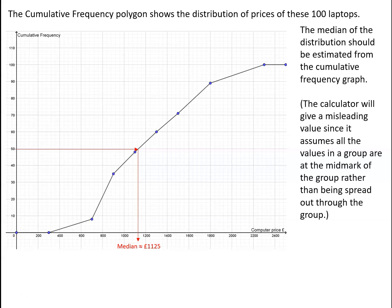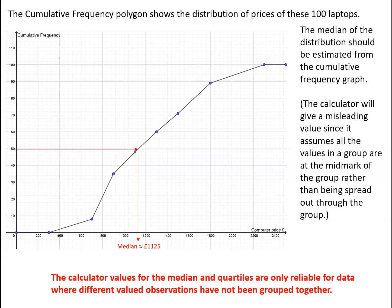It is worth noticing that the calculator will have given a misleading value for the median, because it assumes that all values in a particular group are at the mid-mark of that group, rather than being spread out through the group. The calculator values for the median and quartiles are only reliable for data where different valued observations have not been grouped together. We will come across this again when we come on to measures of spread in the next two videos.